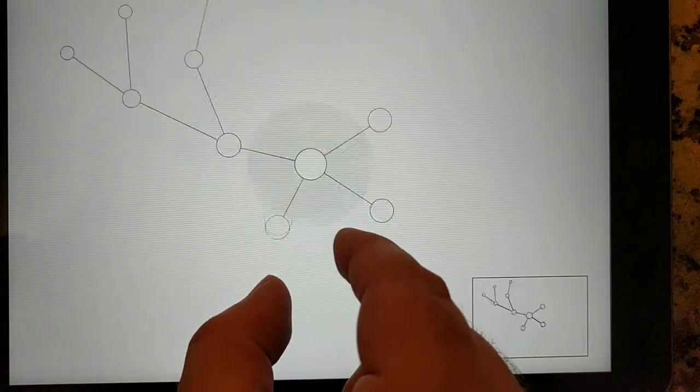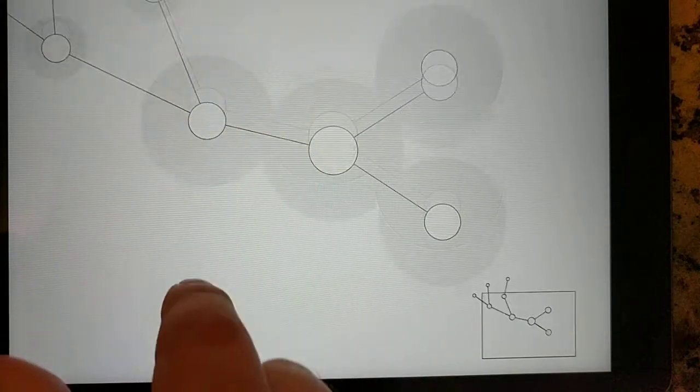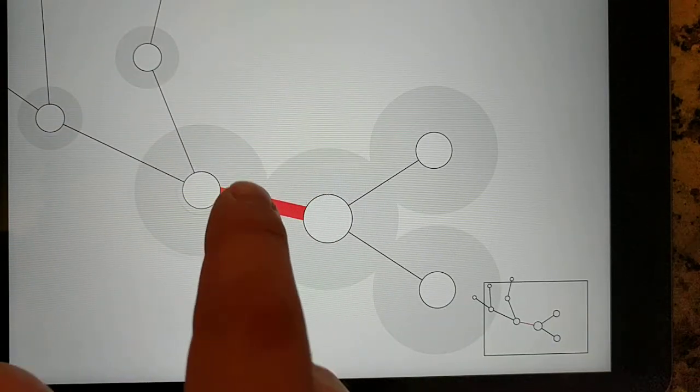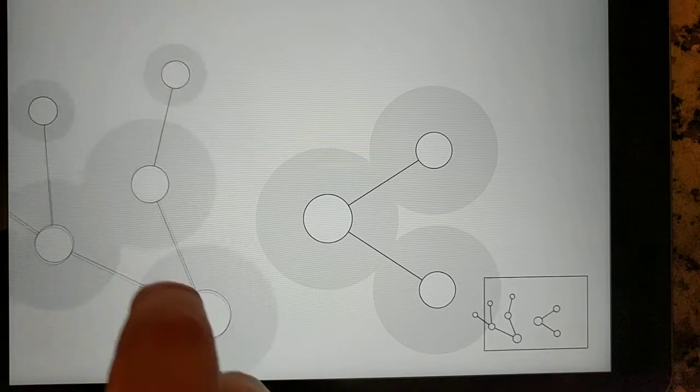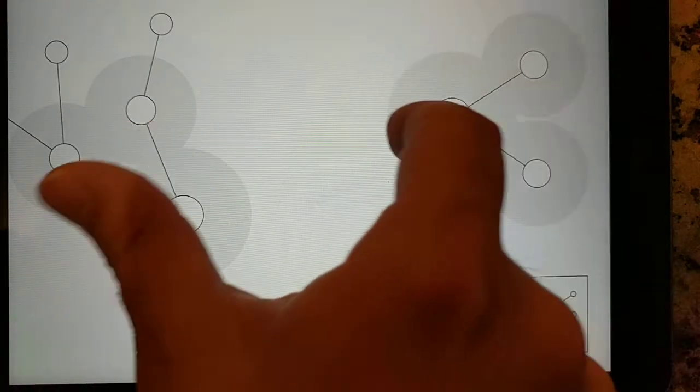We can delete a node by dragging it back into its parent, and we can delete edges by tapping them once and then twice, which makes this now its own entirely separate subtree from this one.